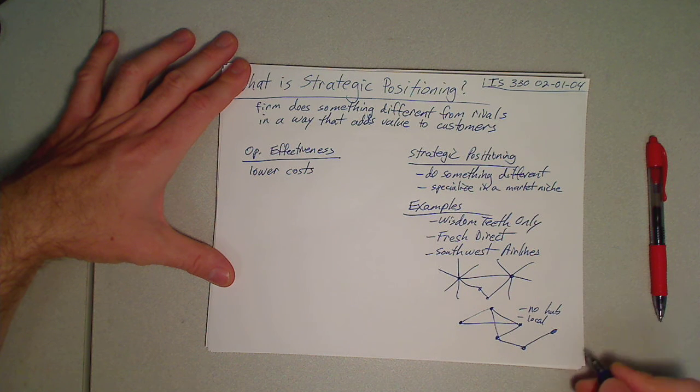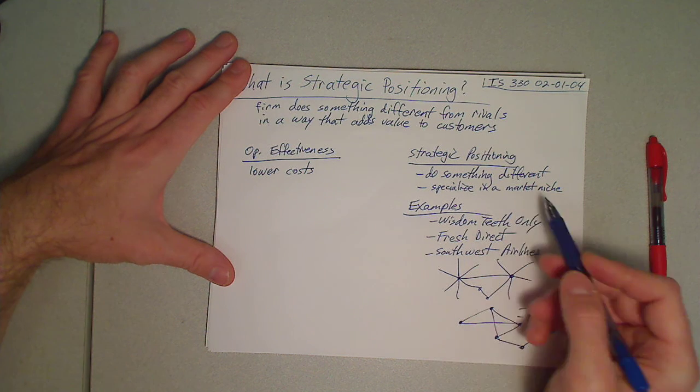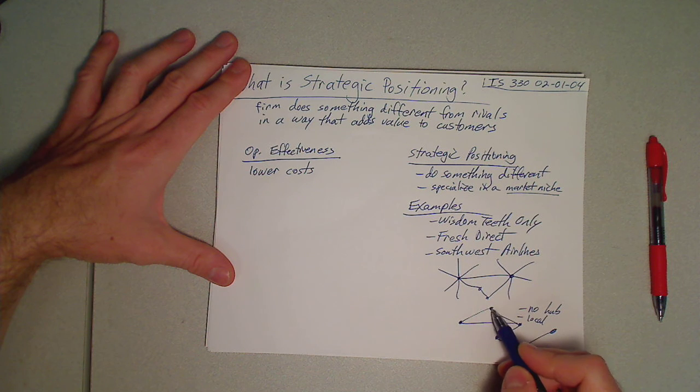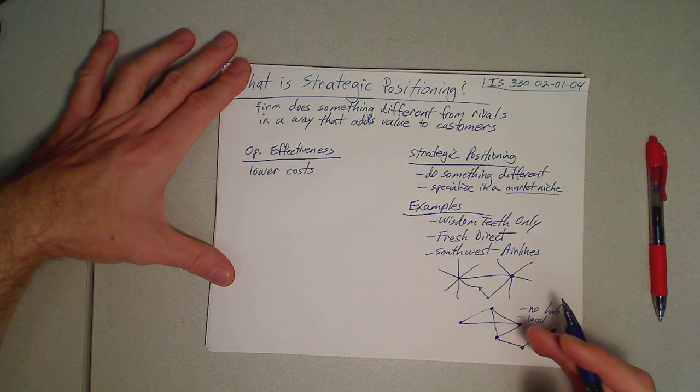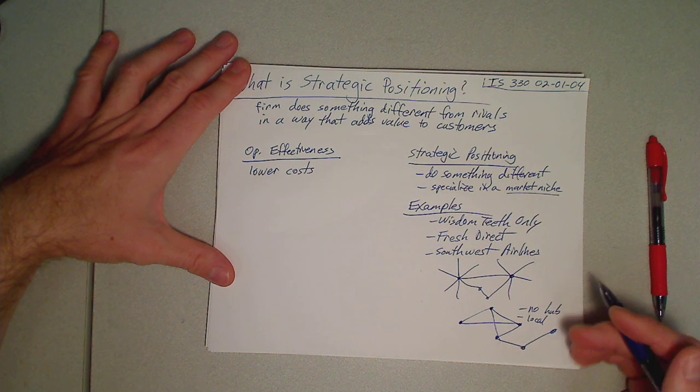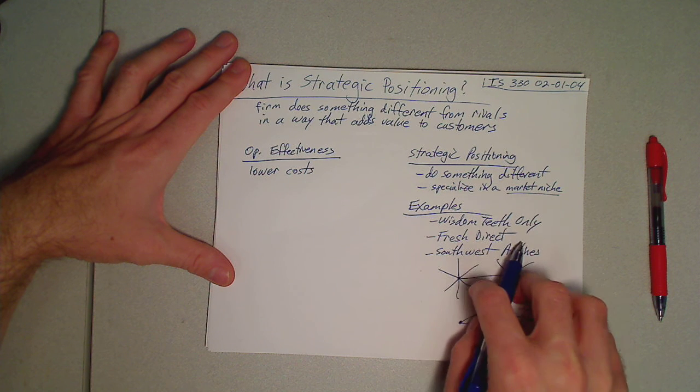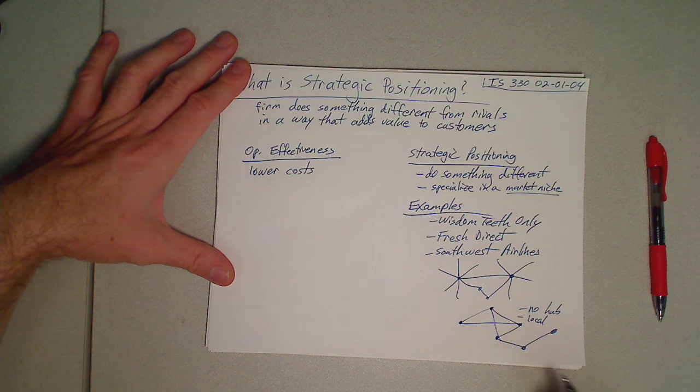They focused, their original strategy was focusing on local commuters in the Texas area. So they were focused, they were on a specific market niche and they were doing something different in that they weren't using this traditional hub and spoke model. That was able to lower costs, add value to their customers, and allow them to focus in a way that they could gain a strategic competitive advantage, sustainable competitive advantage against their rivals.